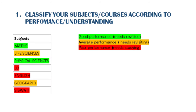Firstly, you want to classify your subjects or courses according to your understanding or performance. I'm going to use my high school subjects as an example. The ones highlighted in green are the ones I'm good at and just need revision. The ones highlighted in orange are the ones I'm performing average in and most topics need revisiting. And the ones highlighted in red are the ones I'm poorly performing in and need to actually go back and study.